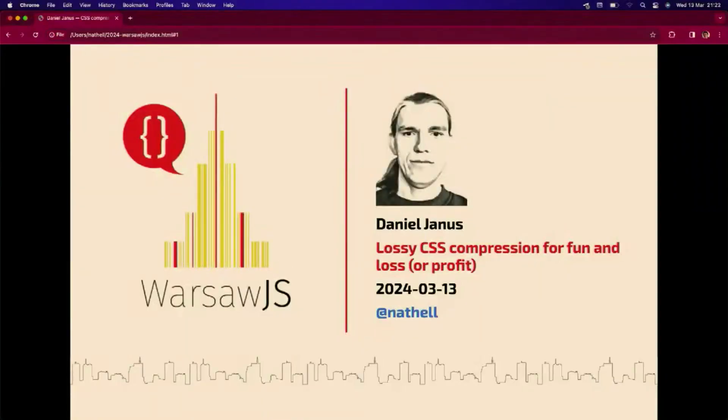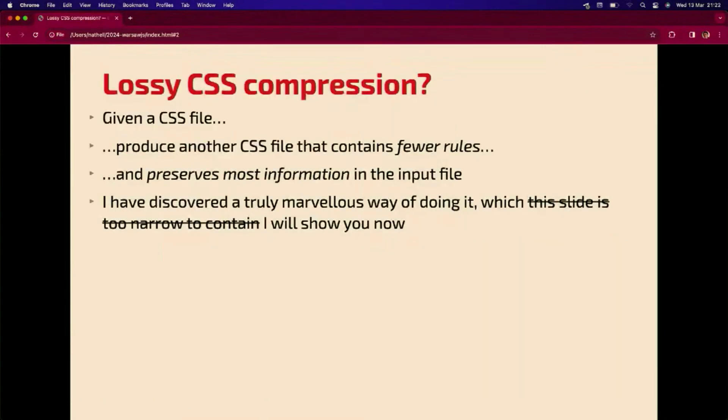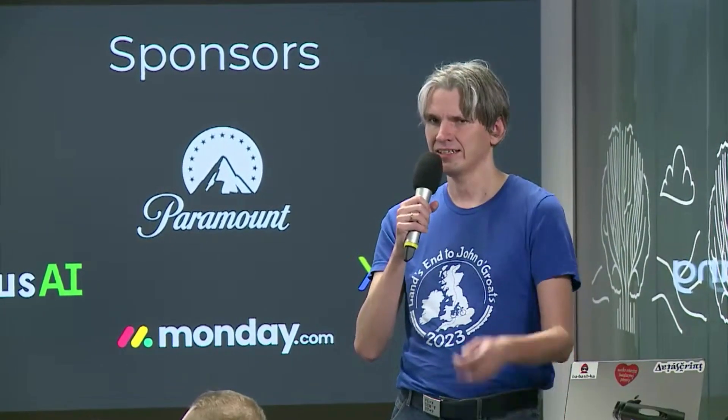Lossy compression. We normally think of lossy compression as being capable of compressing images — you take some image and produce an output image that's smaller and kind of similar to what you pass in as input. And I've actually invented a way of doing the same thing with CSS. So given a CSS file, you can produce another CSS output that retains hopefully most of the information that is in the input file and is smaller.